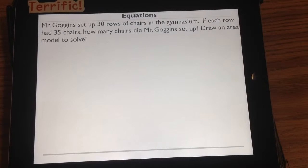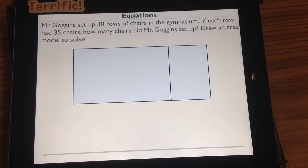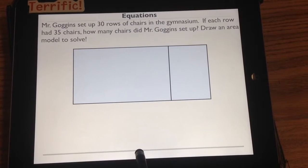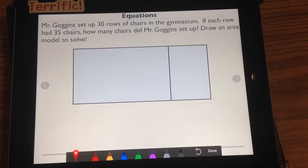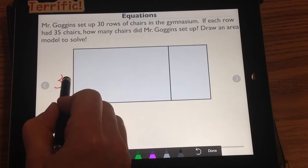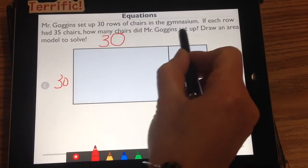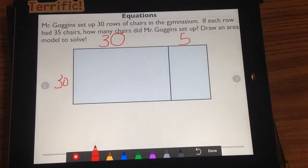I'm imagining that you have an area model in your head. Let's see if it looks like mine. Is that what yours look like? What we're going to do is we're going to break up our 30 rows and our 35 chairs. 30 is our easy 10, so of course it goes on our left side. If I put our 30 on our left side, and I take our 35 and I break it up into 30 and 5, I can use unit form to work this out.